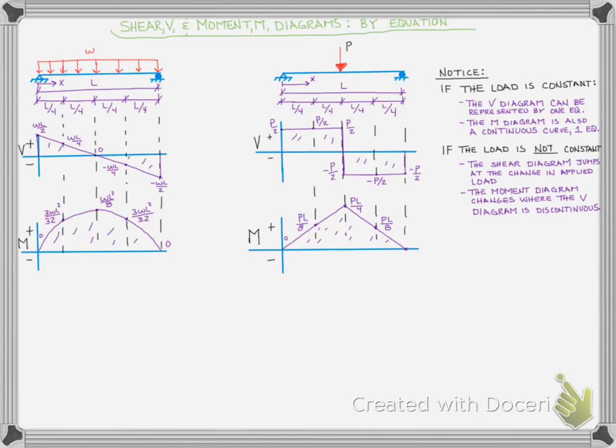But what I also really want you to notice is that, as we say here, notice if the load is constant then the shear diagram could be represented by one equation—it's a nice constant line—and even the moment diagram, because the shear diagram is constant and the load is constant, the moment diagram could be represented by one equation. It's a parabolic curve.